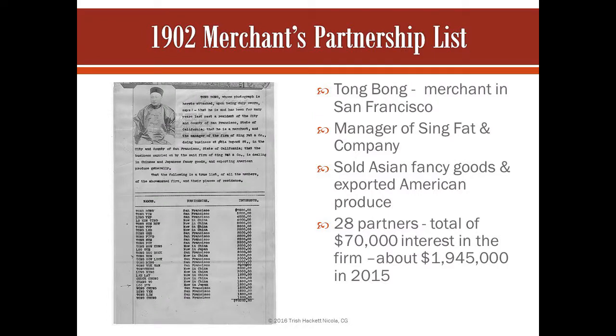This is a 1902 merchant's partnership list. They allowed merchants to come in, but they had to prove that they were merchants. This one tells all about him — he was a merchant in San Francisco, the name of the company, and what they sold. They had 28 partners for a total investment of $70,000. It tells how much each partner had invested and where that person was living — some were in China and some in San Francisco. The $70,000 is worth almost $2 million in today's dollars.